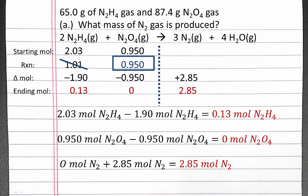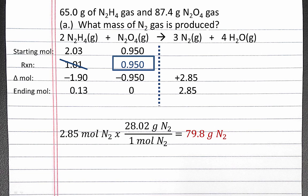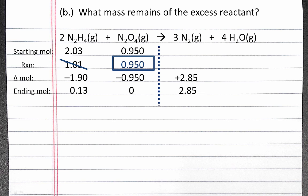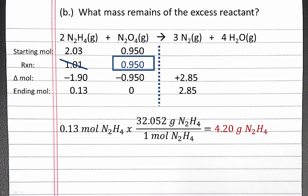Now we can calculate the mass of N2 gas that's produced. We can convert our 2.85 moles of N2 gas into grams of N2 gas using its molar mass, and we'll get 79.8 grams of N2. This answers part A. To answer part B, we can use the ending moles of N2H4 gas. Since N2H4 gas is the excess reactant, we can convert the 0.13 moles into grams using its molar mass, and we'll get 4.20 grams of N2H4 remaining. This answers part B.